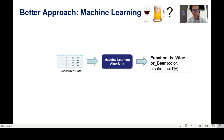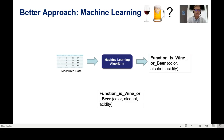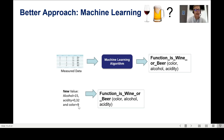When I give my measured data to the algorithm, it returns a function — call it 'is_wine_or_beer' — that receives the variables color, alcohol, and acidity. This function is what I use to determine if something is wine or beer. So I give it new data: alcohol 15, acidity 0.32, color 9 — and the function tells me: this is wine.